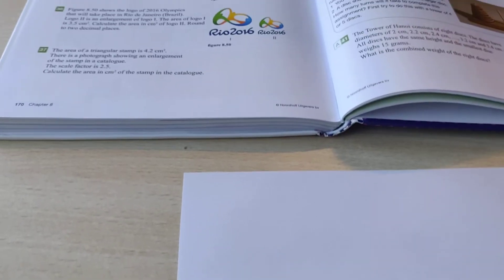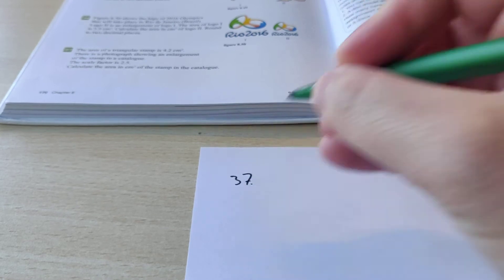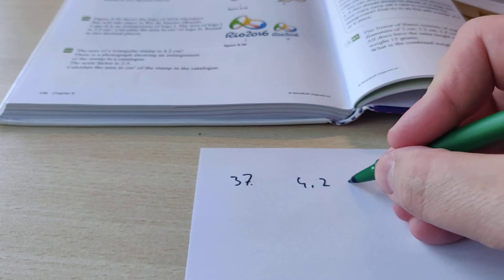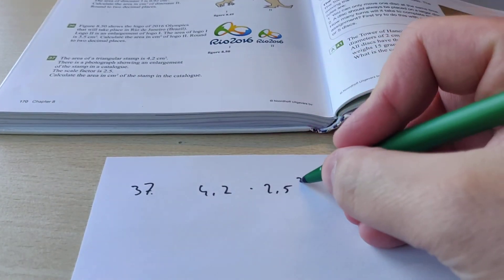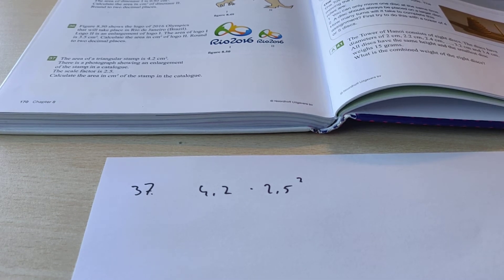So what we're going to do here is actually not a whole lot. For 37, the only thing you have to do is you take the 4.2, because that's the area of the triangular stamp, you multiply that with the scale factor, and because it's about an area, you have to do it times the scale factor squared. And then you know the area of the enlargement.